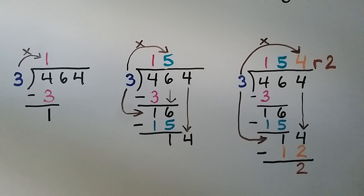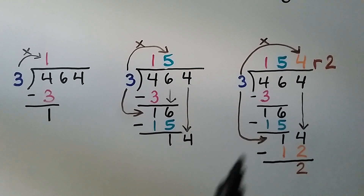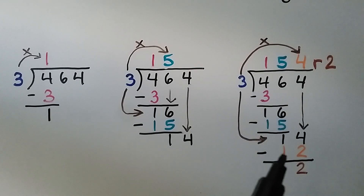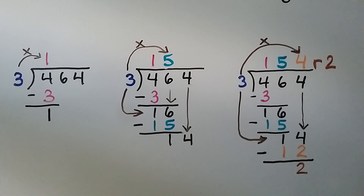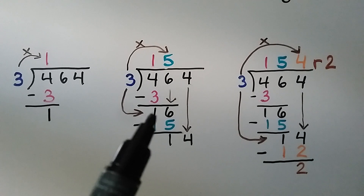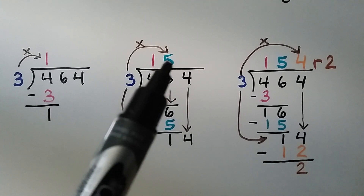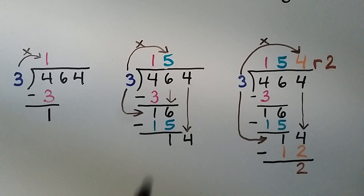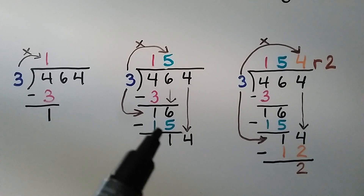We do sixteen minus fifteen and get a one. Now it's the four's turn to come down. We ask ourselves: how many times can three fit into fourteen? Three times four is twelve. We do three times four is twelve, write it here, and subtract — we get a two. Our quotient is 154, remainder two. Every time we find how many times three will fit into that amount, we write our partial quotient above the dividend and do the multiplication and subtract.